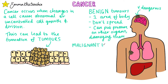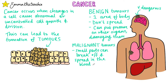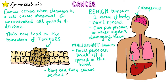Malignant tumours are different. Small parts of them can break off and these cells can travel in the blood. This allows them to spread to different parts of the body and they can also invade neighbouring tissues. Once there, they can then cause secondary tumours. Malignant tumours are difficult to treat because of how they spread around the body.